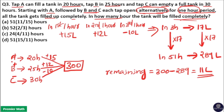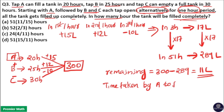This remaining 11 liters will be filled by Tap A. Because 17 sets of three hours are completed in 51 hours, meaning in the 51st hour Tap C was working. So in the next hour, Tap A opens again. The time taken by A to fill 11 liters: A's efficiency is 15 liters per hour, so the time is 11 divided by 15 hours.